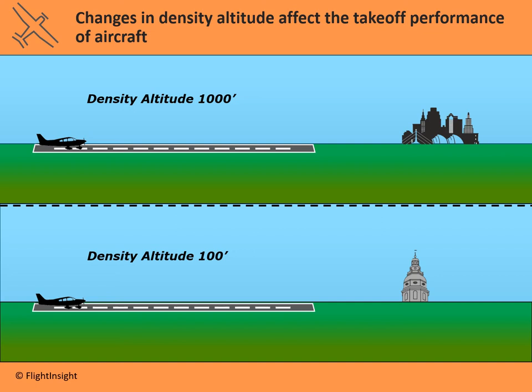Now that we've calculated density altitude, we can make some expectations and predictions about how different aircraft are going to behave at different density altitudes. This is like saying if I place my aircraft in the international standard atmosphere and land in Maryland at a hundred feet, it's going to perform one way, and if I place it in Kansas City at a thousand feet, it's going to perform another way. So what does that density altitude change affect in terms of takeoff performance, cruise performance, and landing performance?